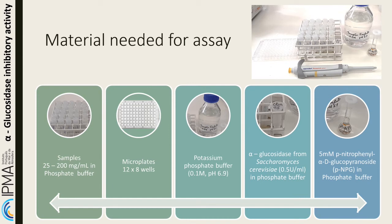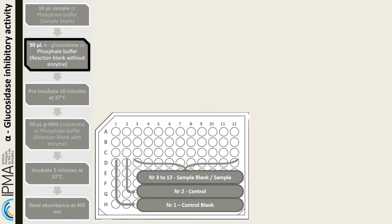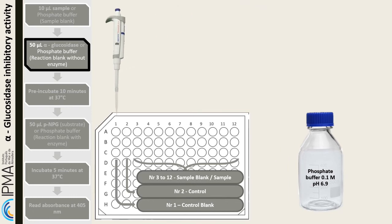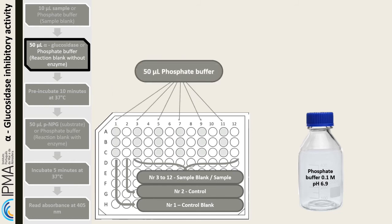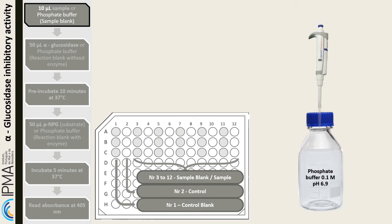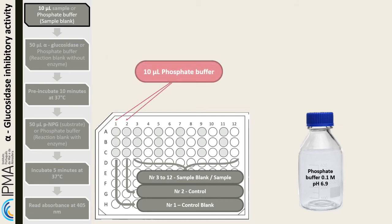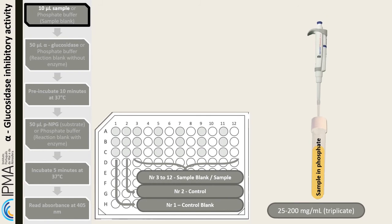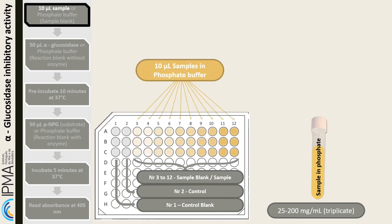As in the previous assay, this assay also requires a control blank, a control, a sample blank, and a sample reaction, as shown on screen. Start by measuring 50 microliters of phosphate buffer to the wells with an odd number. Next, add 10 microliters of phosphate buffer to wells 1 and 2. Pipette 10 microliters of sample to wells 3 to 12; samples must be tested at various concentrations and in triplicates. Then add 50 microliters of alpha-glucosidase to all wells except number 1.